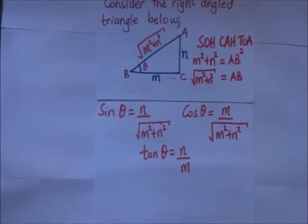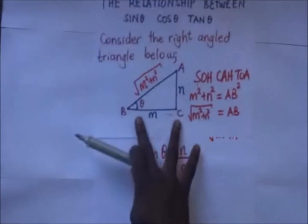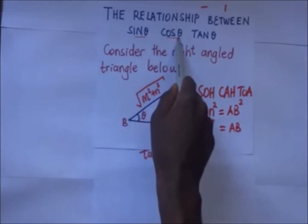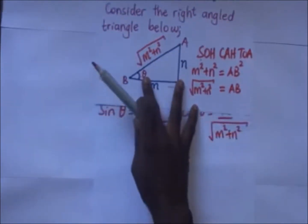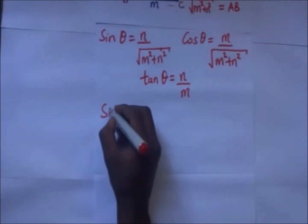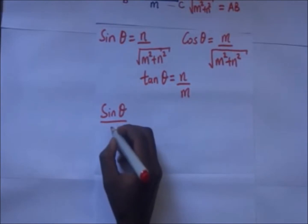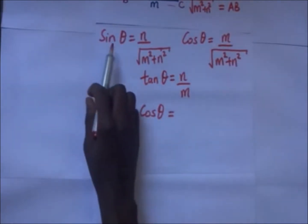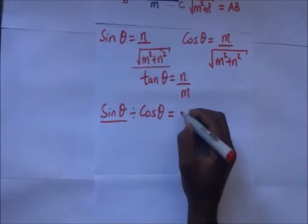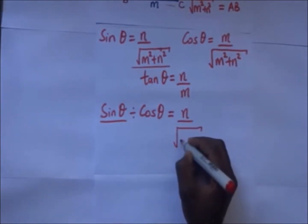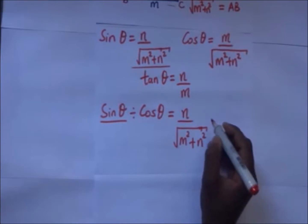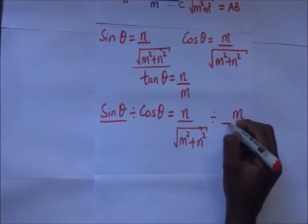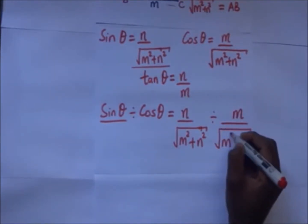Now after stating all that, since we are looking for the relationship that exists between these three, we are going to go ahead and divide sine theta by cos theta and see where that takes us. So sine theta divided by cos theta is going to be equal to N over the square root of M squared plus N squared, divided by cos theta, which is M over the square root of M squared plus N squared.